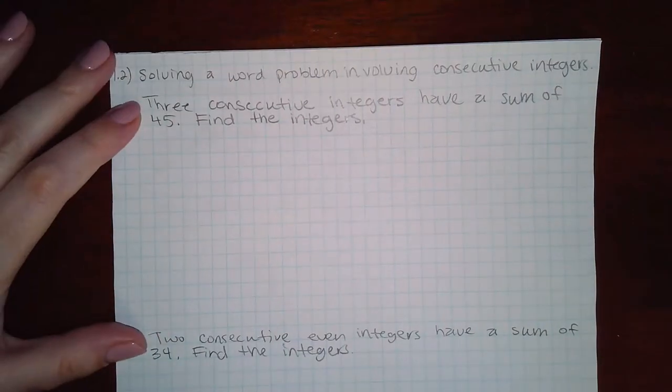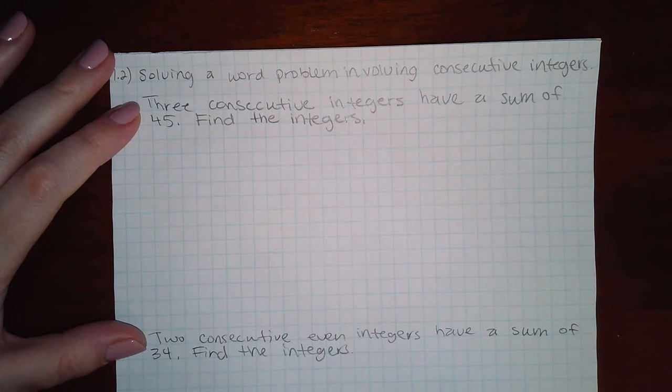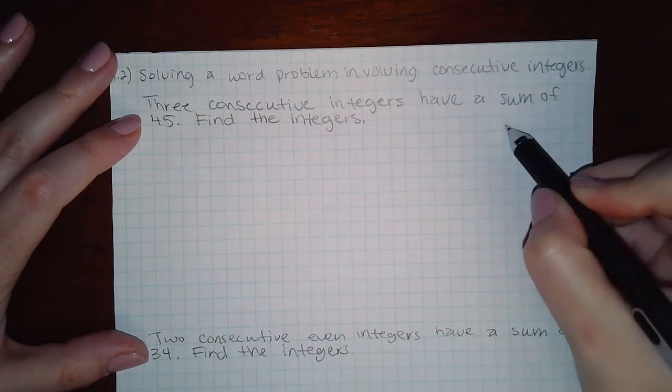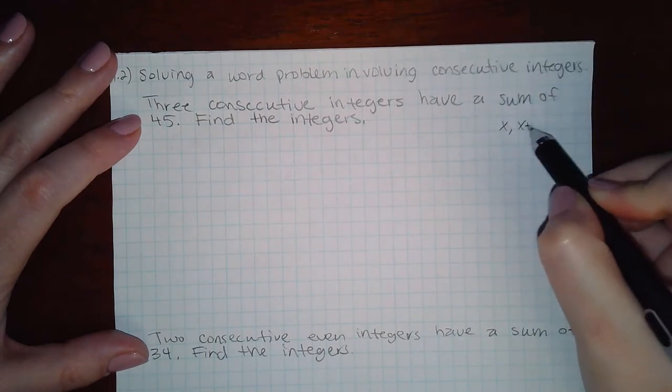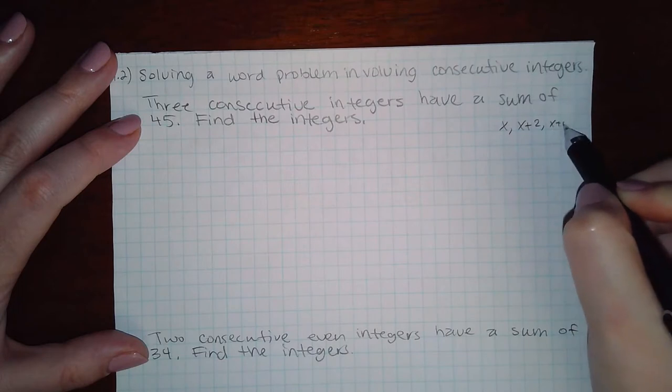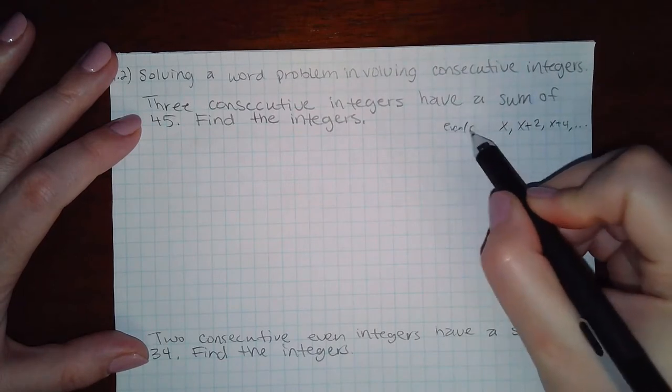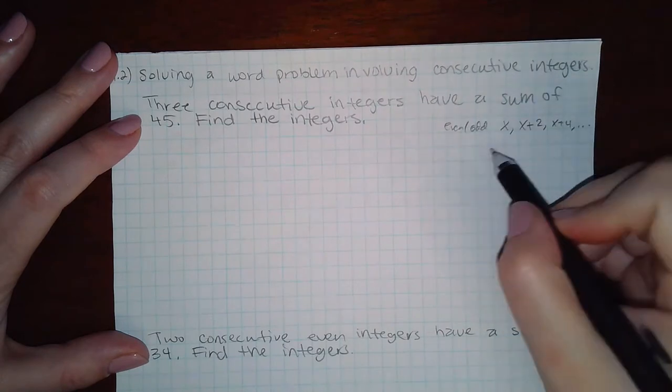Here we are solving a word problem involving consecutive integers. So in a previous video we did discuss consecutive integers, so you have x, x plus 2, x plus 4 and so forth for even and odd consecutives.